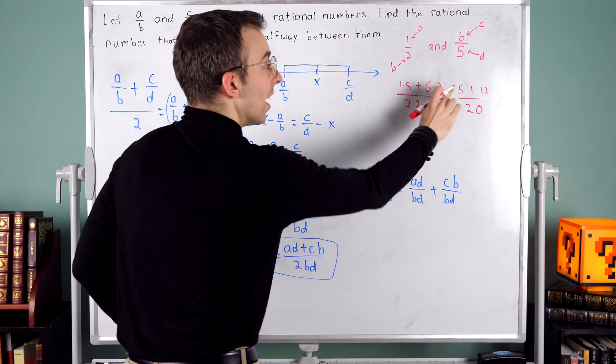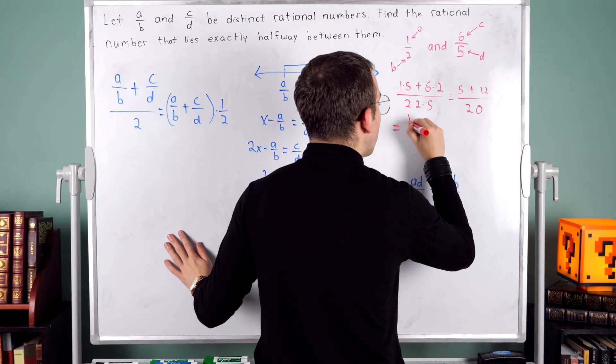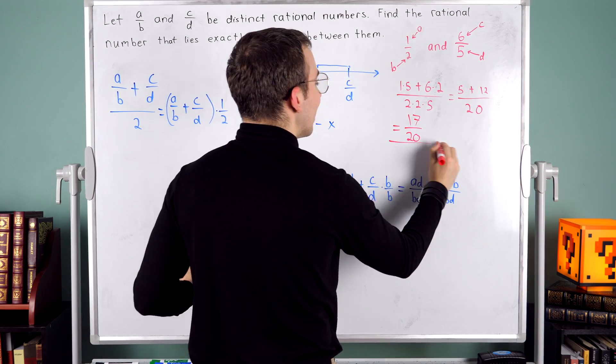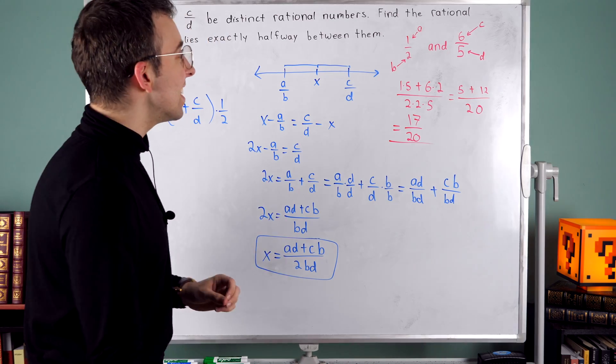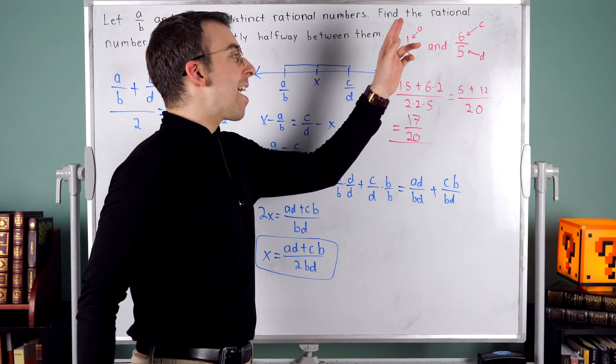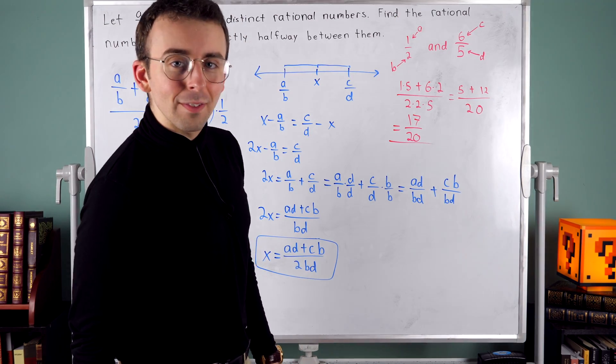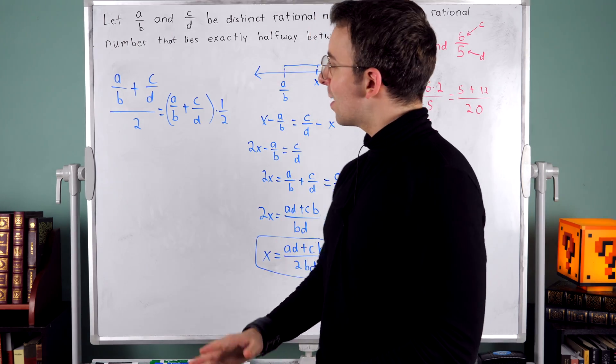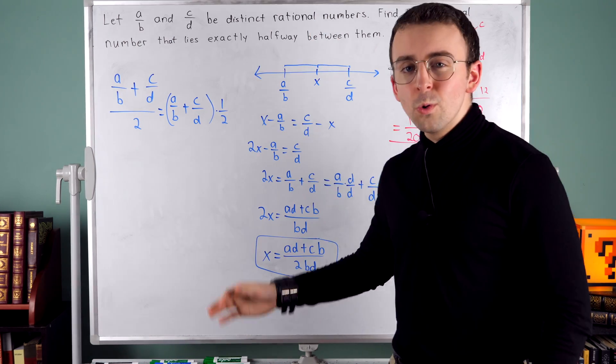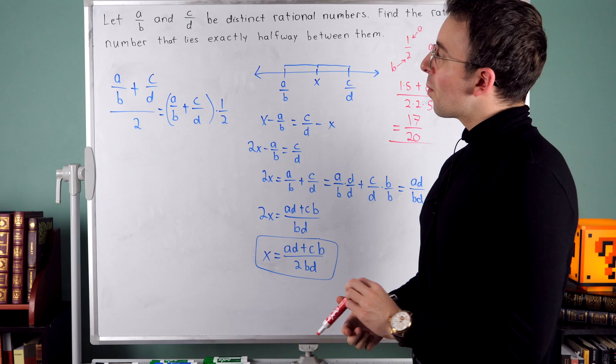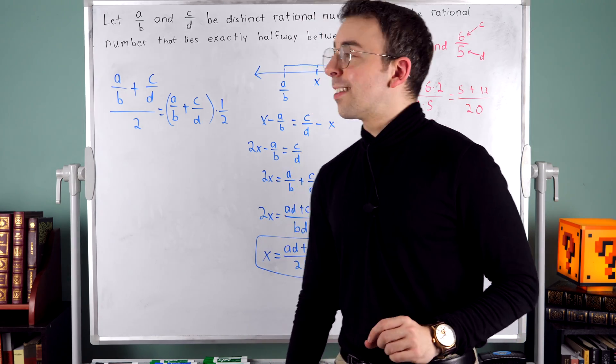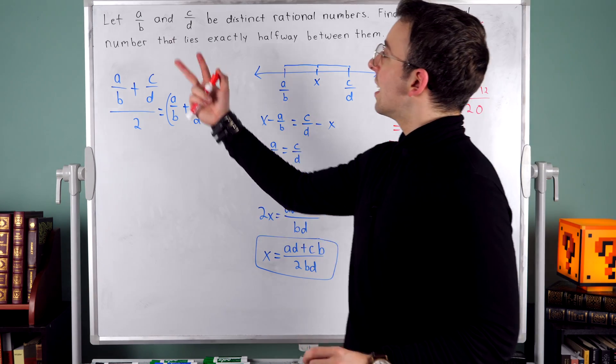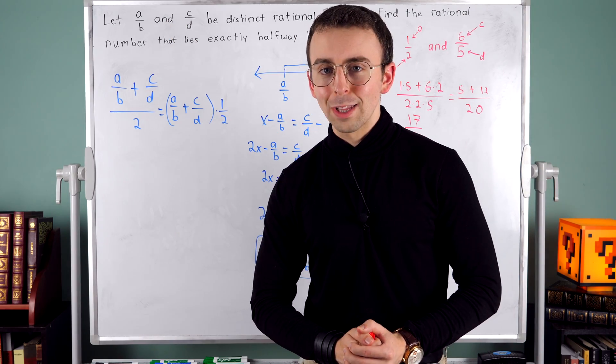So I've got five plus 12, which is 17 over 20. And that's the rational number that's exactly halfway between a half and six fifths. So hopefully you'll agree that's not too complicated. You just don't want to be too intimidated by letters and fractions. That's how you find the rational number halfway between two other rational numbers.